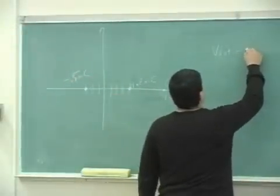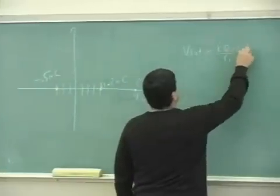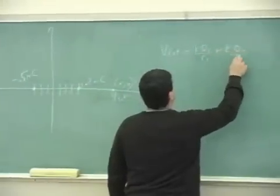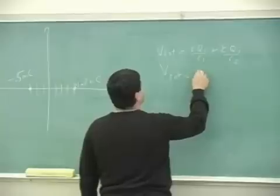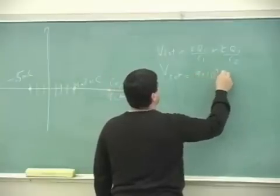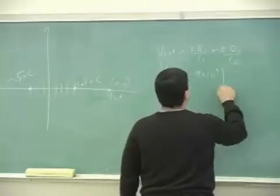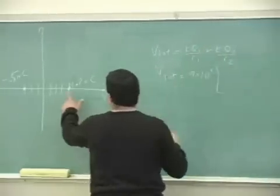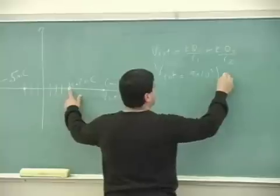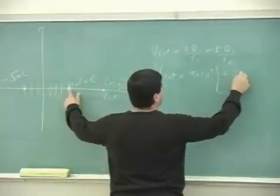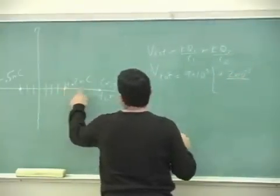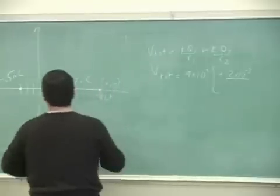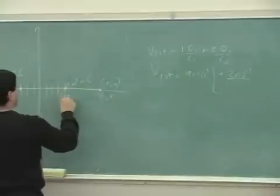So we can just simply add the potential due to this and to that. So k, q1, r1 plus k, q2 over r2. We can factor out the 9 times 10 to the 9th. And we have q1, this one, positive 0.2 millicoulombs. So that's 10 to the minus 3 divided by its distance, which is x minus, what's this point?